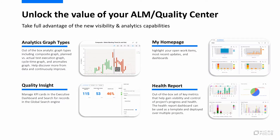In the visibility and analytics area, we introduce new graph types such as the composite graph, which enables you to combine and correlate up to three graphs. The plan versus actual graph helps you track your test execution progress. The cycle time graph shows how long defects remain in each phase. And the anomalies graph shows how many defects remain in a specific phase for a specified duration.